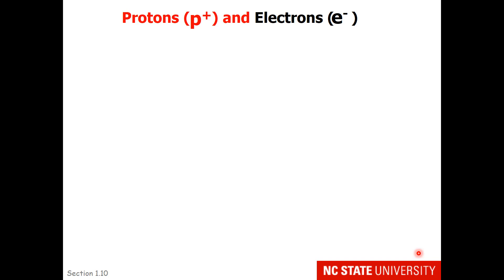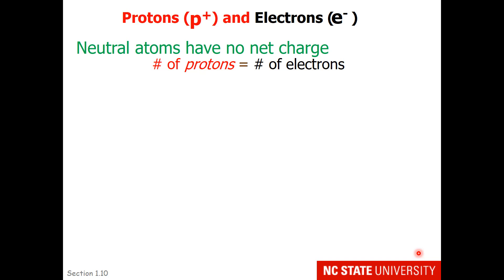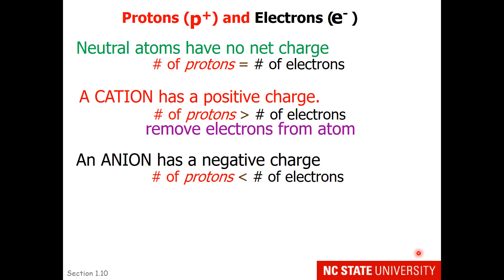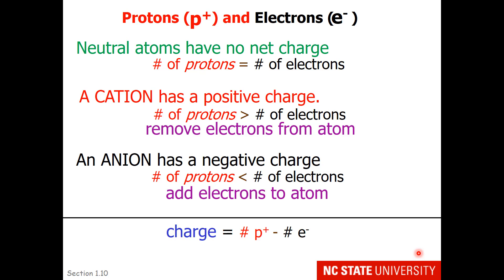Now let's look at the relationship between protons and electrons. Neutral atoms have no net charge, so their number of protons is equal to their number of electrons. A cation has a positive charge because the number of protons exceeds the number of electrons. You cannot change the protons of an atom in a chemical reaction, so the only way to get a cation is to remove electrons from an atom. An anion has a negative charge, which means it has more electrons than protons. To make an anion, you add electrons to an atom. To get the charge on an atom, take the number of protons minus the number of electrons. To calculate the number of electrons, take the number of protons and subtract the charge.